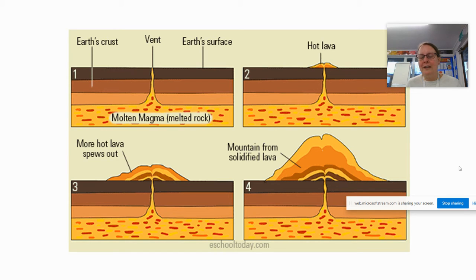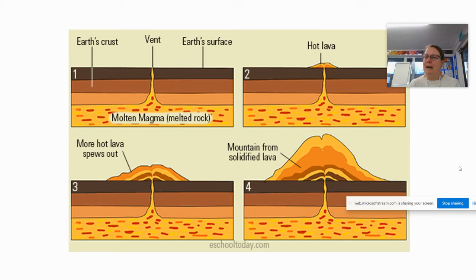Hopefully you've watched the video and you will know what I'm showing you now. Volcanoes are formed when molten magma — which is melted rock — rises to the surface of the earth through a vent, all the way up the vent until it gets to the earth's crust, which is the ground that we live on and walk on. The hot lava — magma under the ground, lava above the ground — when it comes out, it forms the shape of a volcano and becomes a mountain. It solidifies; it becomes solid.